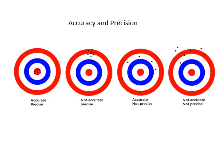Just to clear up accuracy and precision, if you look at these targets here, the first one on the left is accurate and precise. The center is the true value, they're all very close to the true value and very close to each other.